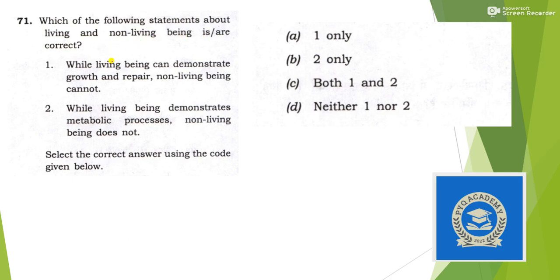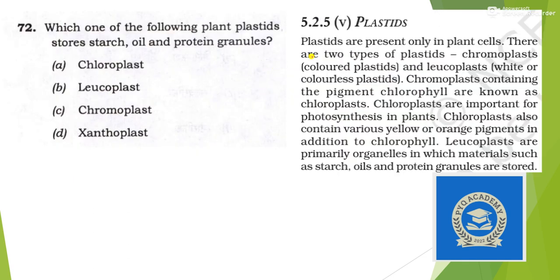Next: which statements about living and non-living beings are correct? Living beings can demonstrate growth and repair while non-living beings cannot — true. Living beings demonstrate metabolic processes while non-living beings do not — also true. So answer is option C.